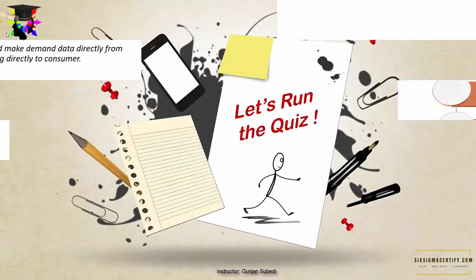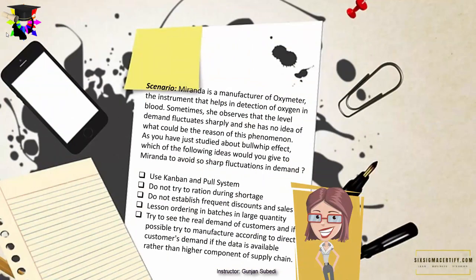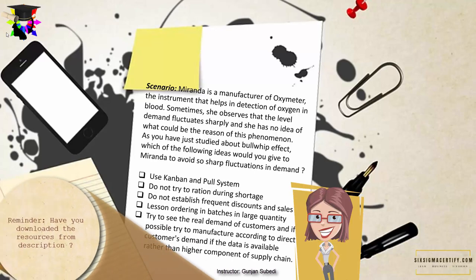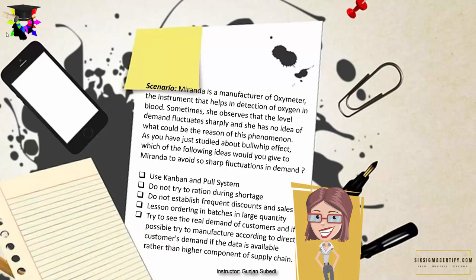Let's run the quiz. Miranda is a manufacturer of oximeters — instruments that detect oxygen levels in blood. She observes that demand fluctuates sharply and has no idea why. Which of the following ideas would you give Miranda to avoid demand fluctuations? Option 1: Use Kanban and pull system. Option 2: Do not ration during shortage. Option 3: Do not establish frequent discounts and sales. Option 4: Limit ordering in batches of large quantity. Option 5: Try to observe real customer demand and manufacture according to direct customer demand if data is available.